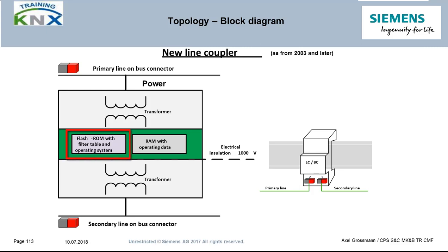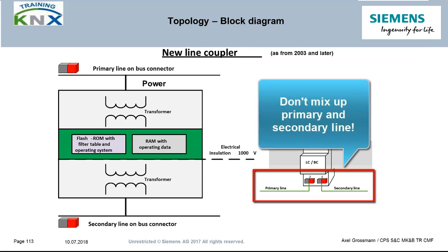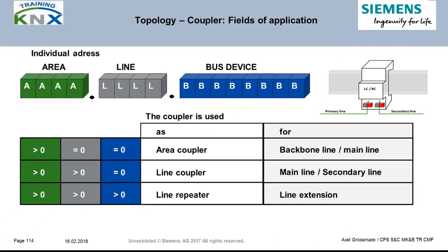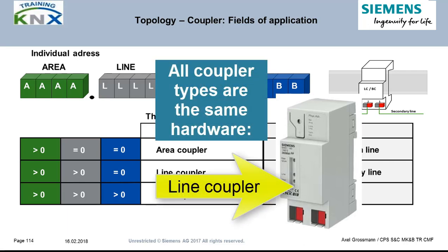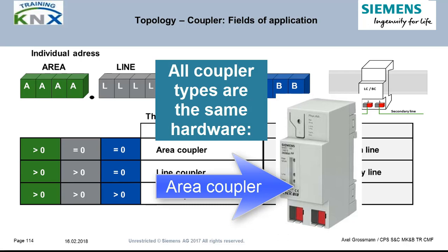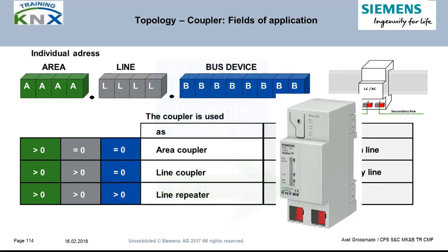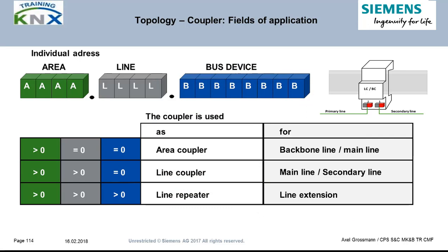Looking at the coupler hardware itself, it has two identical wiring terminals on the front side by side — make sure not to mix up primary and secondary line connections. Couplers, regardless of where they are used, are always based on the same hardware. Whether they filter and how they filter depends on their parameter settings and on their individual address.